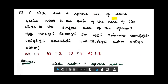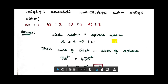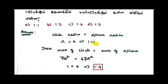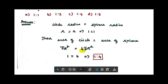Last one: a circle and a sphere are of the same radius. What is the ratio of the area of the circle to the surface area of the sphere? Circle radius equals sphere radius. Area of circle is πr². Surface area of the sphere is 4πr². So the ratio is πr² to 4πr², which simplifies to 1 is to 4.